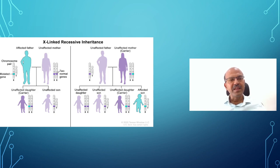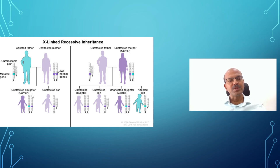A quick recap of how X-linked recessive inheritance works. In the scenario of an affected father and unaffected mother, the X chromosome from the father goes to the girl, so she becomes a carrier with a normal X chromosome from the mother as well. The son doesn't get the X chromosome from the father — he only gets X from the mother and Y from the father, so the son is not affected.